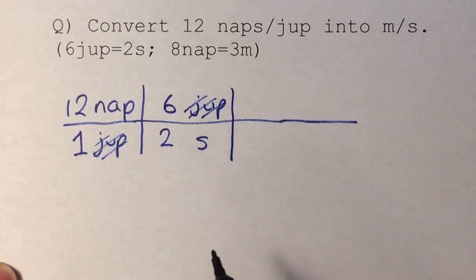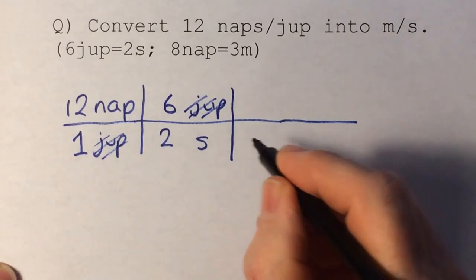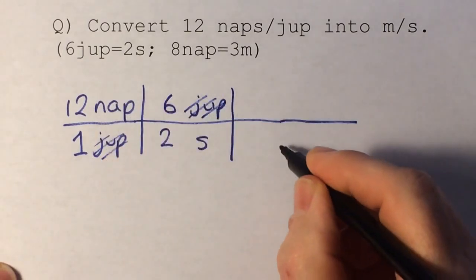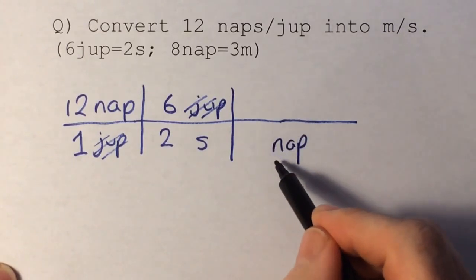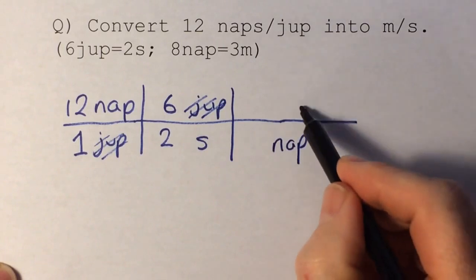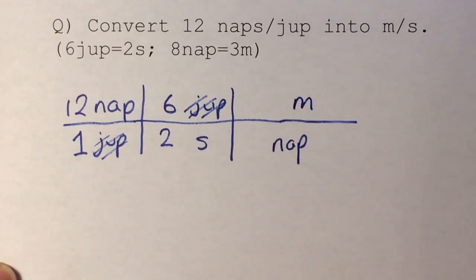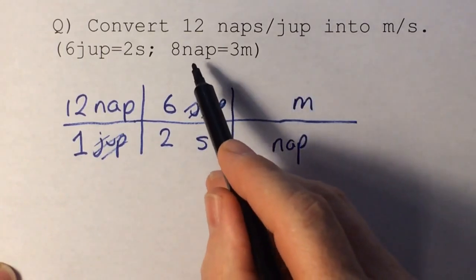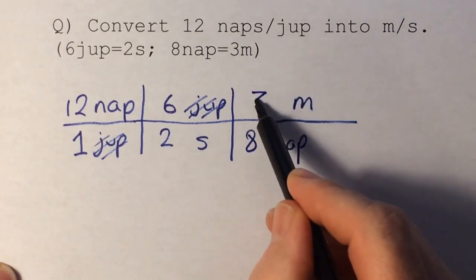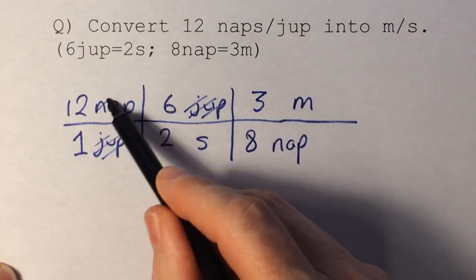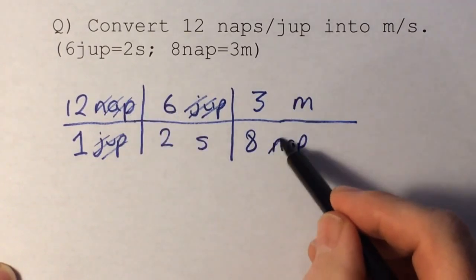So now I need to do another conversion. I need to go from naps into meters. Nap is on the top here, so if I want to get rid of it, I have to put nap on the bottom there. And because I've used the bottom space here, the meters has to go on top. And do the conversion: 8 of these equals 3 of those. And again, I can do this cancelling.